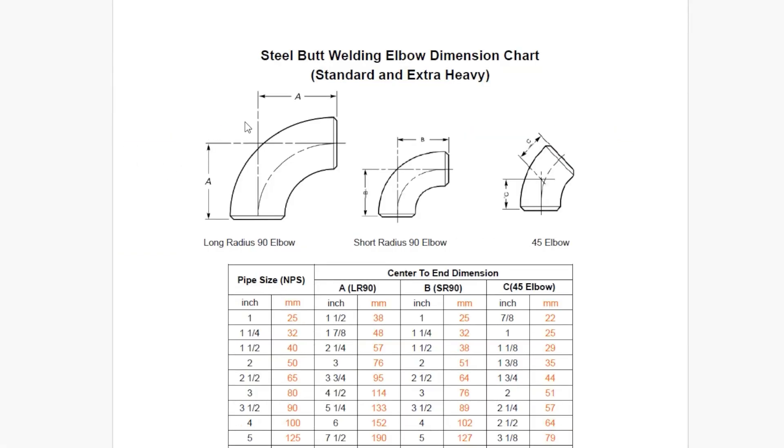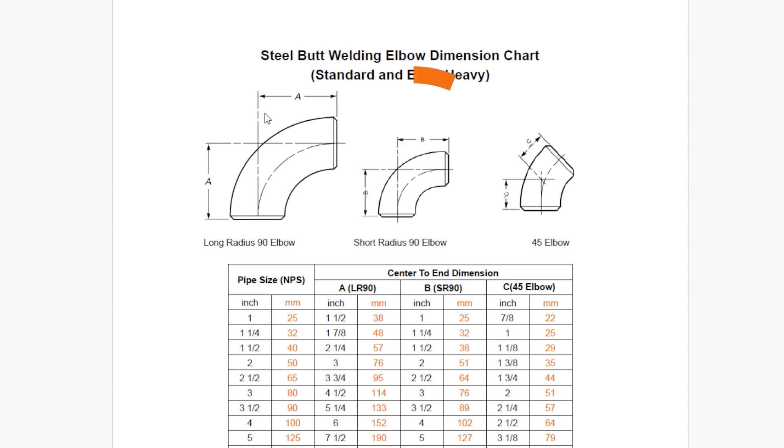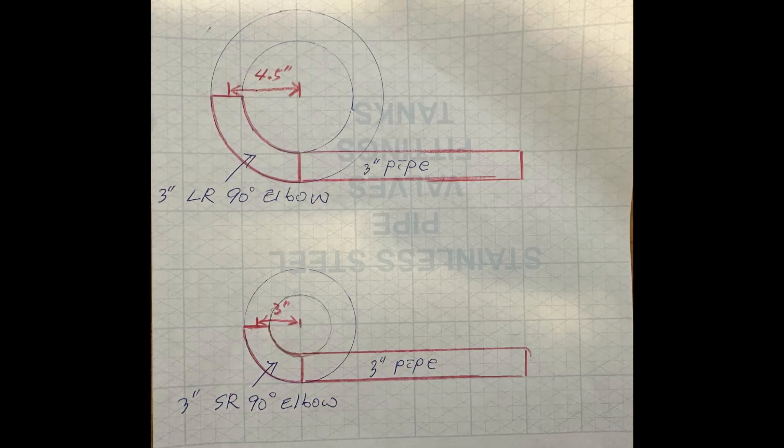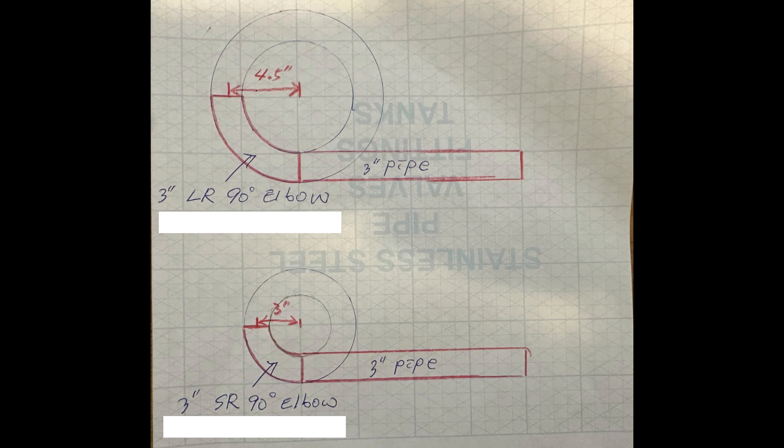The first is the elbow dimension chart that pipe welders and pipe fitters must know. There are two types of 90-degree elbows: long radius elbow and short radius elbow. The long radius elbow is longer than the short radius elbow.